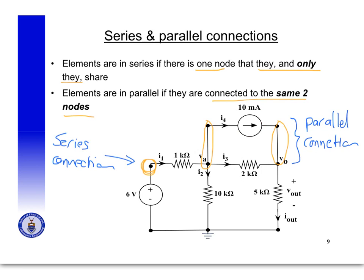Using that definition, we can also see that this node and this node connect the 10 kilohm resistor to the 6-volt source and the 1 kilohm resistor. So we can say that the 1 kilohm resistor in series with the 6-volt source is all in parallel with the 10 kilohm resistor. And that brings me to the end of this lecture.